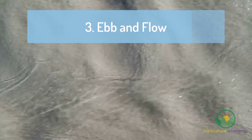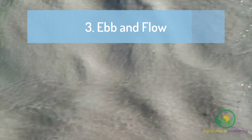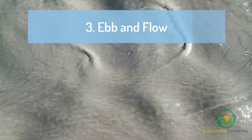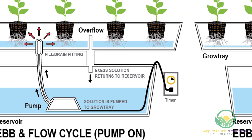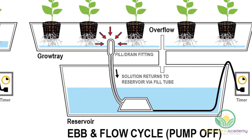Third, Ebb and Flow, also known as the flood and drain system. Plants embedded in a growing medium are placed over a reservoir filled with nutrient water. A pump periodically forces the water up into the section housing the plants, then the pump is turned off and the water gradually flows back into the reservoir. This is another simple technique and, apart from the pump and piping, little expert equipment is required for success.